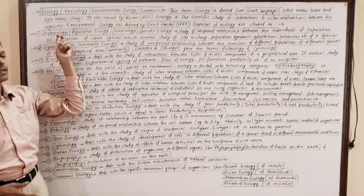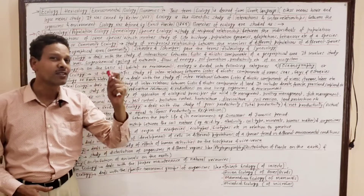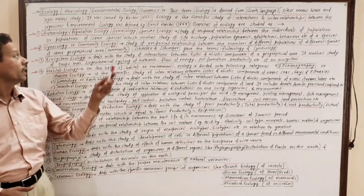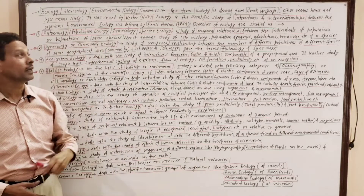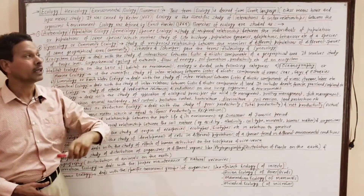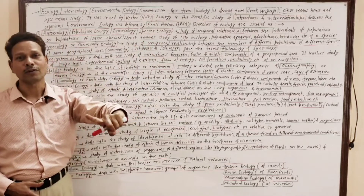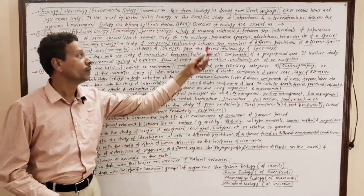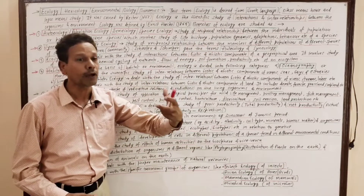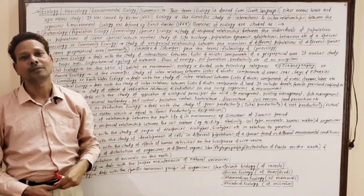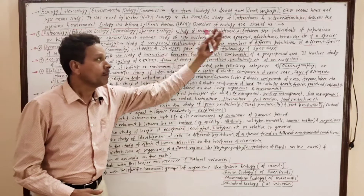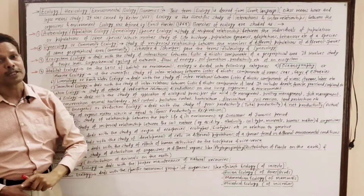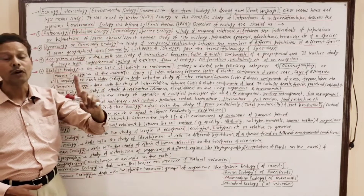The first branch is autecology, also called oat ecology, population ecology, deme ecology, or species ecology. This branch of ecology deals with the interaction and reciprocal relationship between members of the same population and same species found in a geographical area.